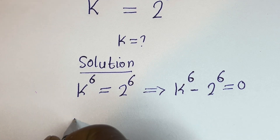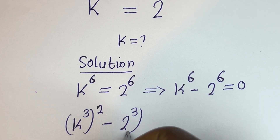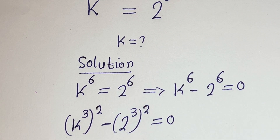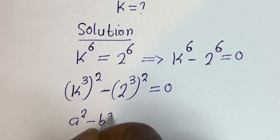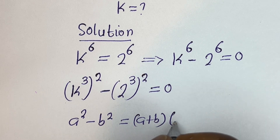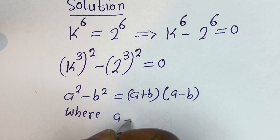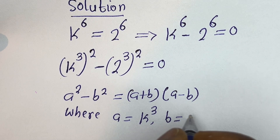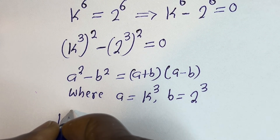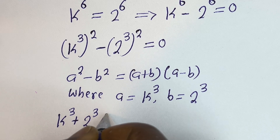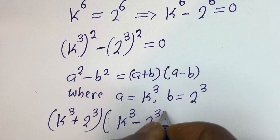This can be written as k to the power of 3, squared, minus 2 to the power of 3, squared, is equal to 0. Note that a squared minus b squared equals a plus b, times a minus b. Where a equals k to the power of 3 and b equals 2 to the power of 3, this becomes k³ plus 2³, times k³ minus 2³, equals 0.